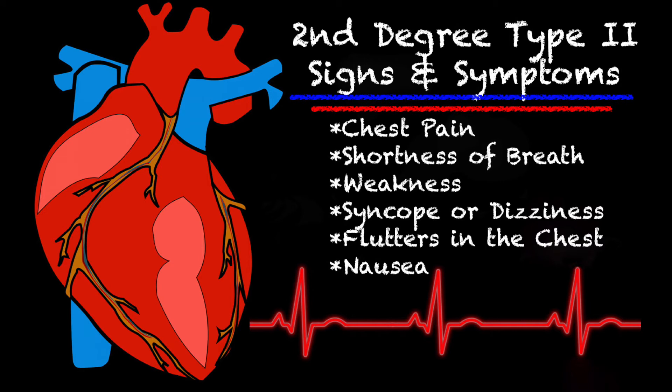Some of the signs and symptoms you may expect with somebody experiencing a second degree type 2 are chest pain, shortness of breath, weakness, syncope or dizziness, fainting, flutters or palpitations in the chest, and nausea and vomiting.